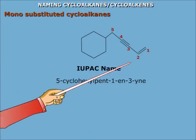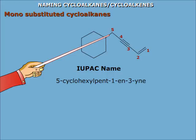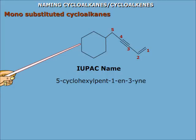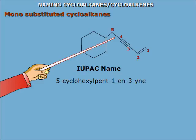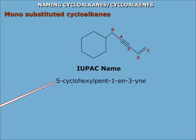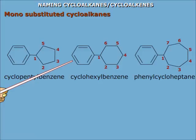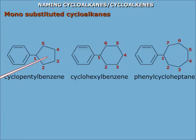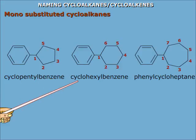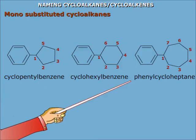When the attached acyclic part is complex enough to be named as a substituent, then the cycloalkane is taken as the substituent. Here the acyclic part is complex enough, so the compound is named 5-cyclohexylpent-1-en-3-ol. When a phenyl group is attached to a cycloalkane having less than or equal to 6 carbon atoms, the cycloalkane is taken as the substituent — this is cyclohexylbenzene — and this compound is phenylcycloheptane.